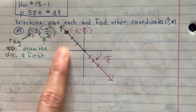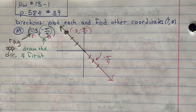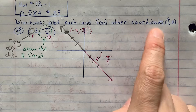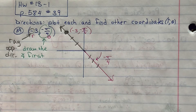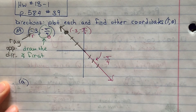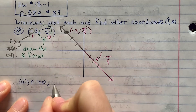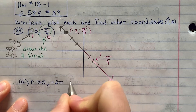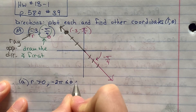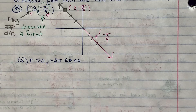So that's the first part of this problem — how to plot the polar coordinate. Now the next part of this question had parts a, b, and c. They wanted me to find other coordinates of theta with various restrictions. Part a wants r to be greater than zero and theta to be between negative 2π and zero.